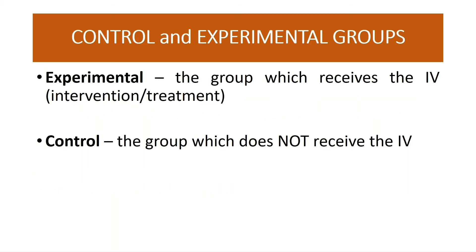Let us now proceed to the difference between control and experimental groups. Simply put, the experimental group is the group that receives the independent variable, or the intervention or treatment used by the researcher. On the other hand, the control group is the group which does not receive the independent variable, or it may receive a different treatment or intervention from the researcher.